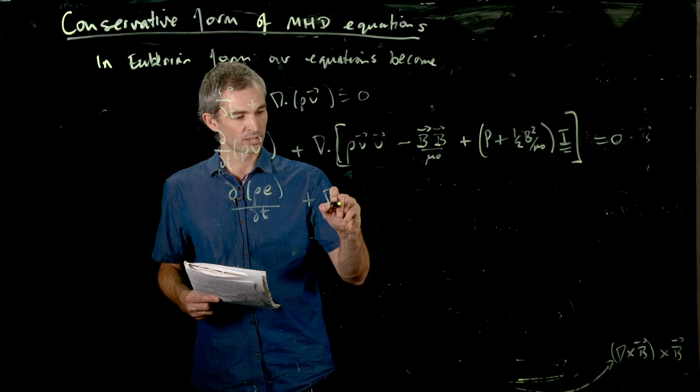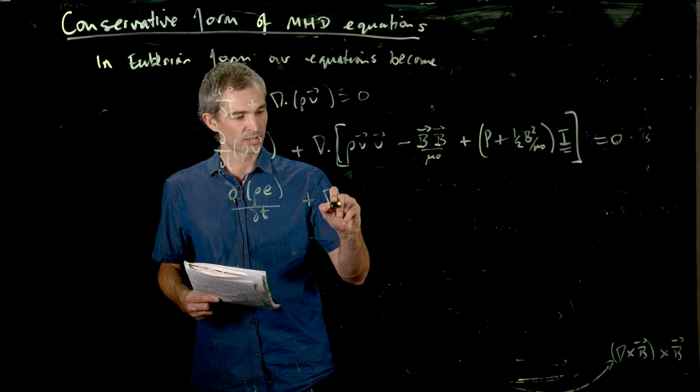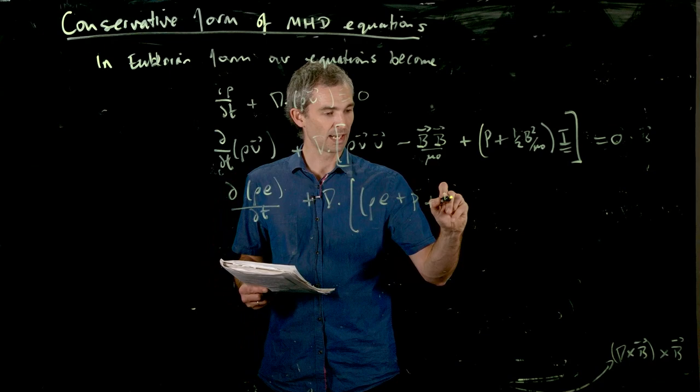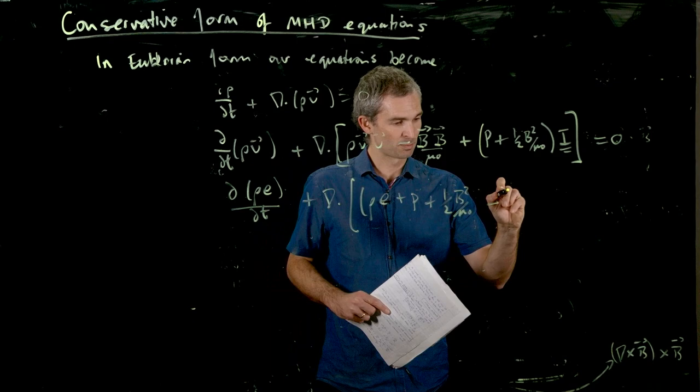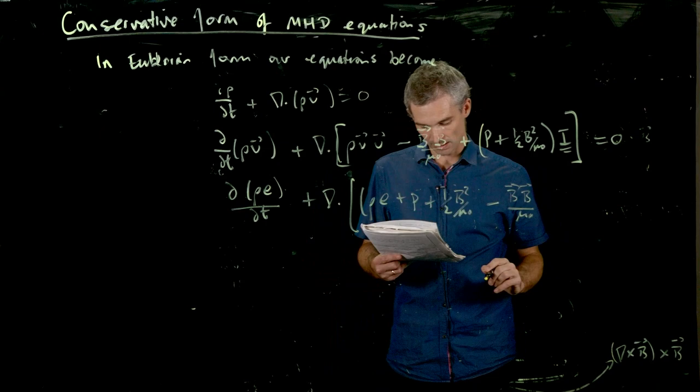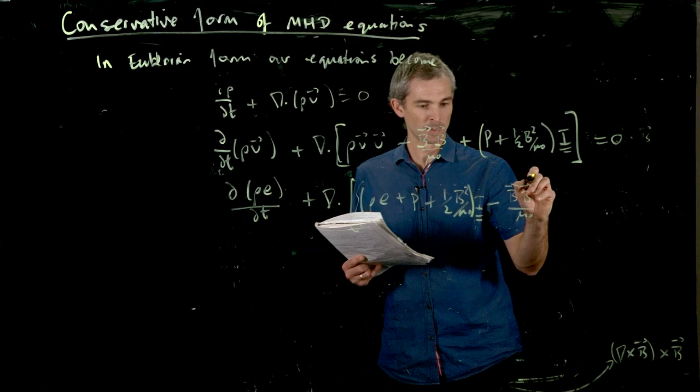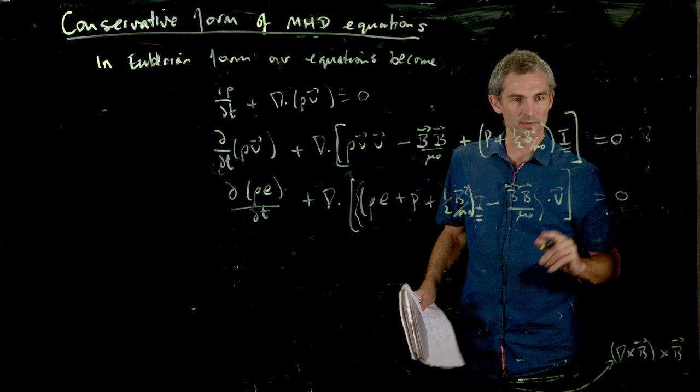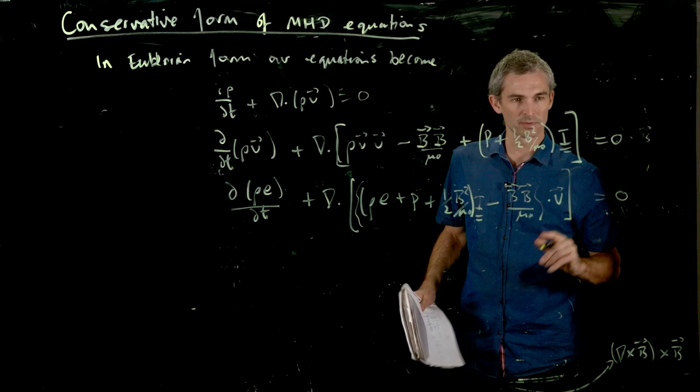The energy equation is rho times the total energy dt, plus the divergence of rho times energy, plus pressure, plus a half v squared on mu naught, minus b b on mu naught, with an identity matrix, and that is all then dotted with v, equals zero. So that's our energy equation conservation form.